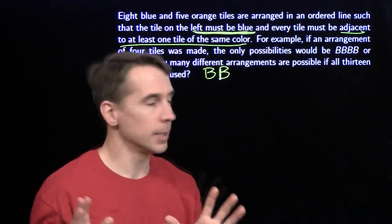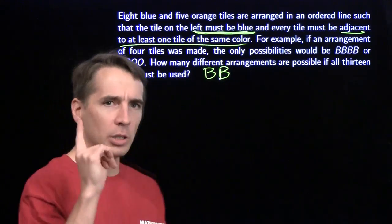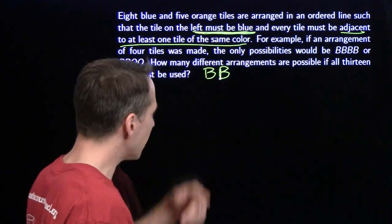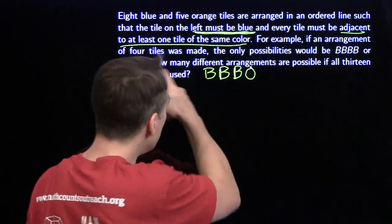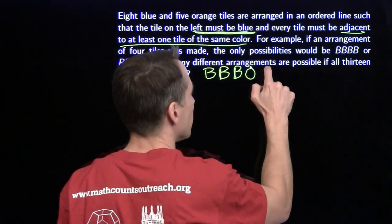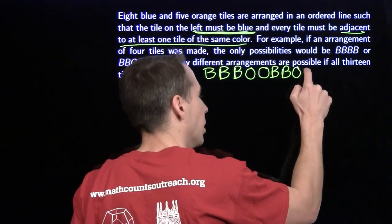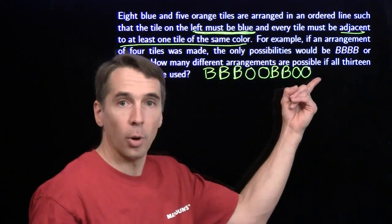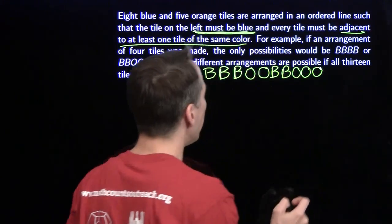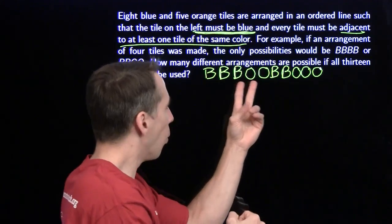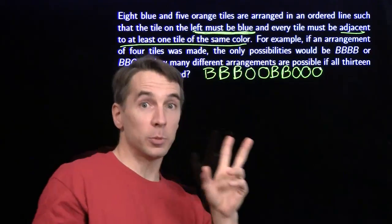I have no idea where to start, so we're going to start by playing. If you have no idea what to do, just do something — get in there, mess around, maybe something will happen. I'll just list out an arrangement and see what I learn. Once I throw in an orange, I have to throw in another orange because every tile must be adjacent to at least one of the same color. I can't have just one blue either — I need to put another blue. So the five orange tiles either all have to be together, or split two and three. I can't split them two-two-one or anything with isolated tiles. They can only be all five together, or split two and three, or three and two.